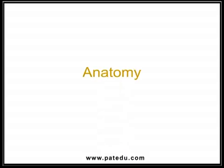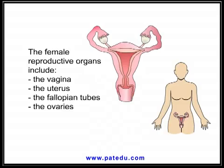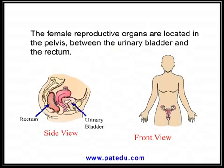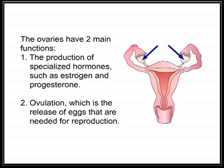The female reproductive organs include the vagina, the uterus, the fallopian tubes, and the ovaries. These organs are located in the pelvis between the urinary bladder and the rectum.